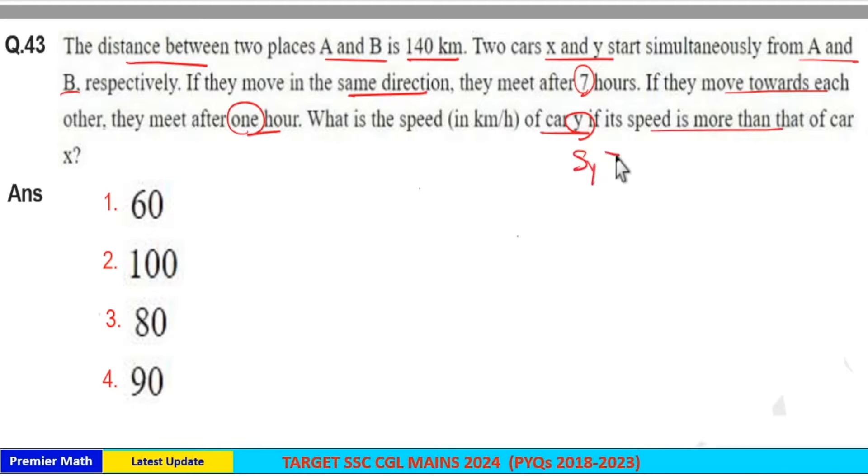Here, the speed of car Y is more than the speed of car X. We have two places A and B with a distance between them of 140 km. Two cars X and Y start from A and B respectively.